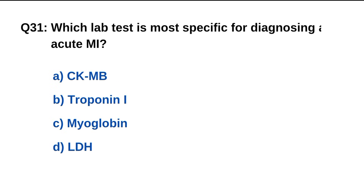Question number 31. Which lab test is most specific for diagnosing an acute MI? The right option is B: Troponin-I.